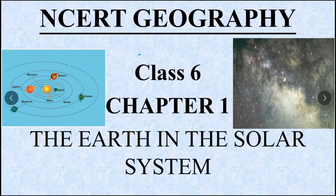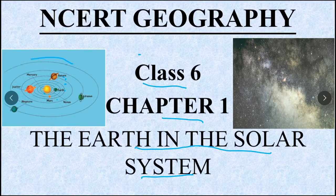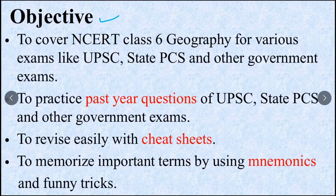Welcome to this initiative. Today we will cover Class 6 Chapter 1 Earth in the Solar System. We know what happens in the Solar System - Sun and various planets which we call Solar System. What is the objective of this course?